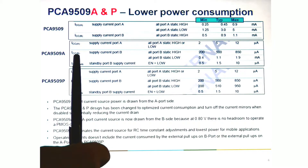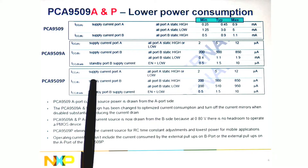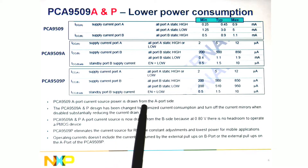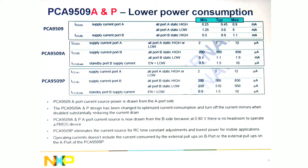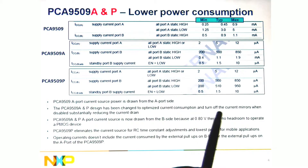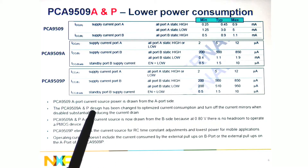The 9509A has the internal current source, while the P doesn't, giving it reduced power consumption. For the 9509A the current source power is drawn from the A port. For the 9509A and P, the design has been changed due to the lower voltage, to optimize current consumption and to turn off the current mirrors when disabled, which substantially reduces the current drain. That's the biggest change in the output of the A side.